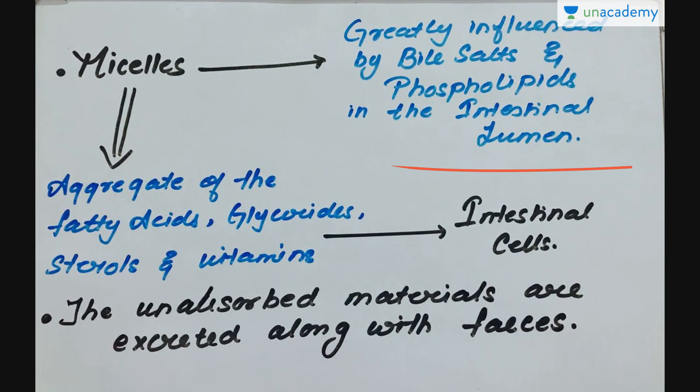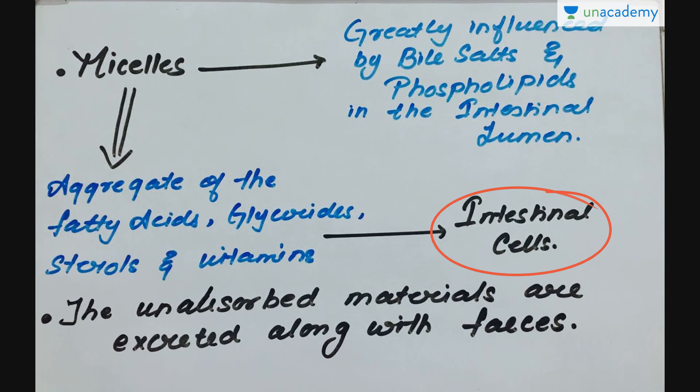From these micelles, which are aggregates of many molecules, the fatty acids, glycerides, sterols, and vitamins are absorbed into the intestinal cells. Any obstruction of bile from entering the small intestine prevents the formation of micelles, which leads to lack of absorption of lipid materials and can cause obstructive jaundice. The unabsorbed materials are excreted along with the feces.